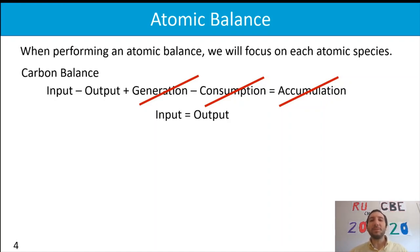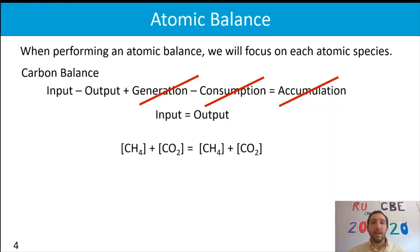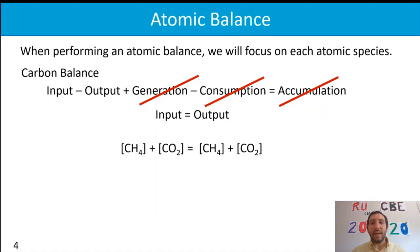We start with a carbon balance. We need to identify where all the carbon is coming in and going out. So we identify the molecular species that contain carbon and whether they're entering, exiting, or both. For our system, methane and carbon dioxide are entering, and methane and carbon dioxide are also exiting.